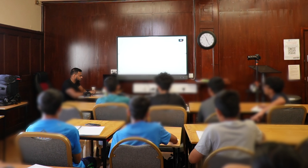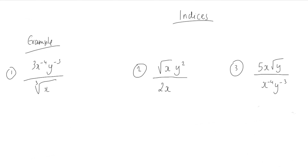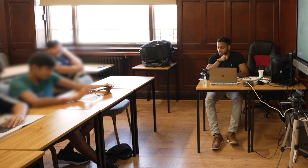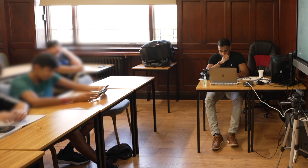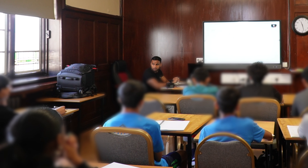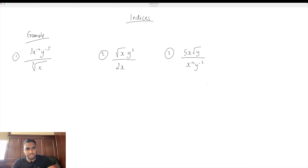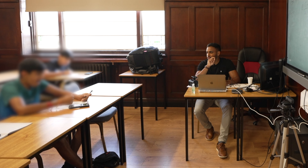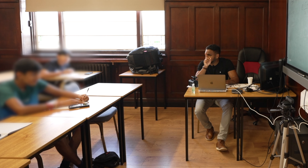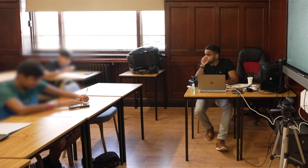Okay, let's do three examples. So has everyone written the three examples? We're going to simplify all of this. Now we're going to have three: x to the minus four, y minus five — that stays the same. But this, okay, cube root x — how else can I rewrite cube root x in terms of a power?